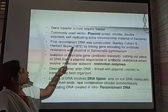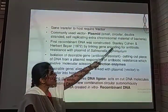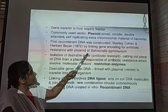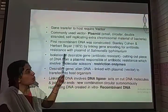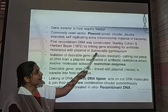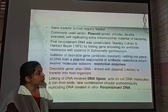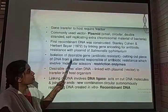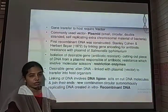The first recombinant DNA was constructed by scientists Stanley Cohen and Herbert Boyer by linking a gene encoding for antibiotic resistance with a plasmid extracted from a microbe called Salmonella typhimurium. The isolated desired gene must show an antibiotic resistant property.